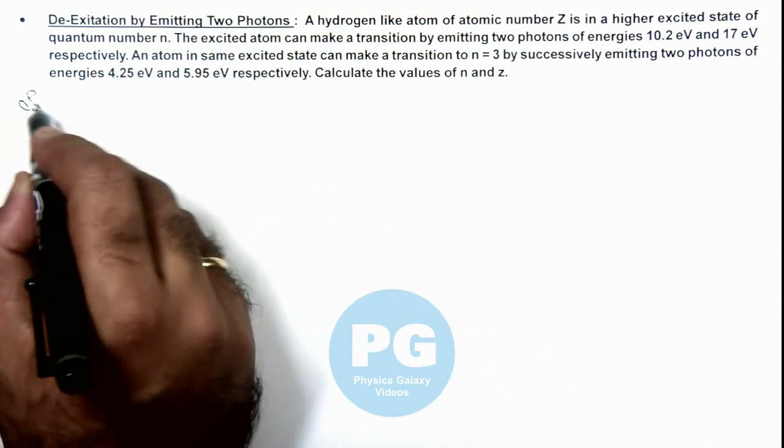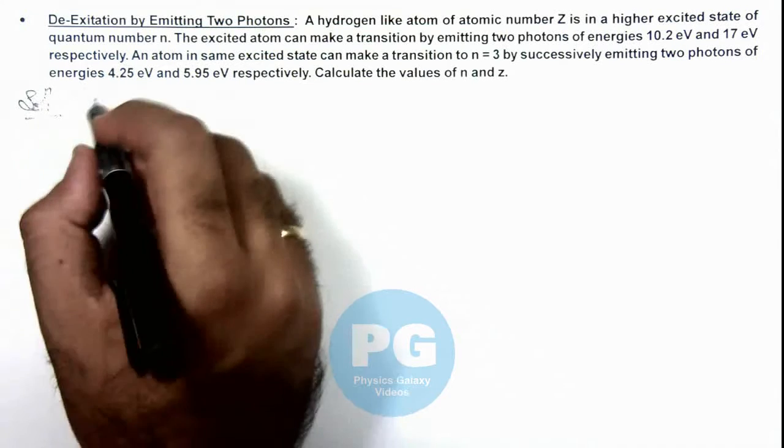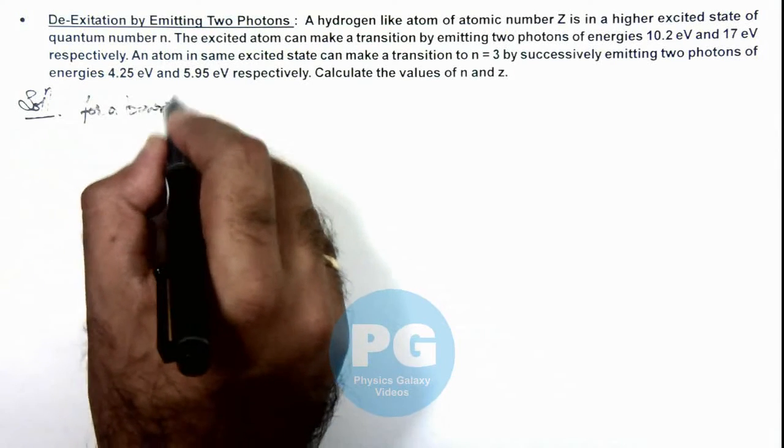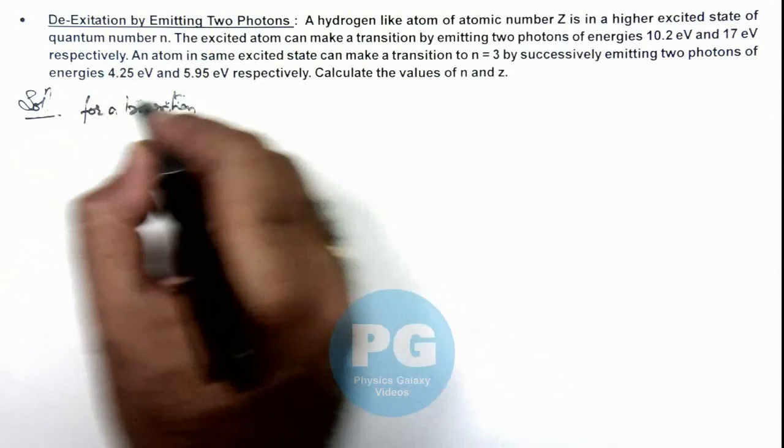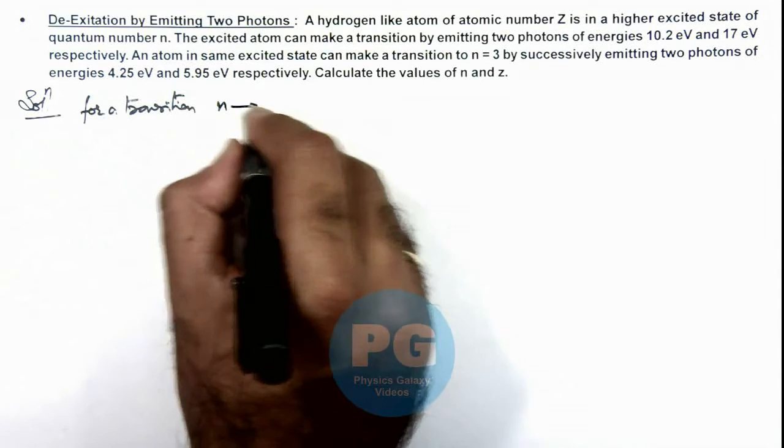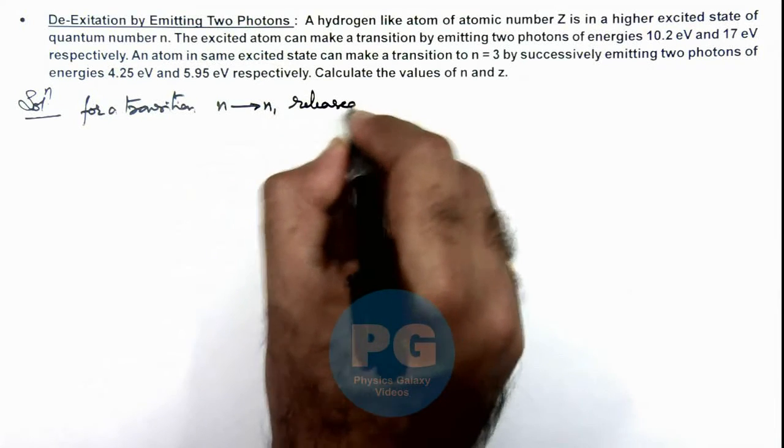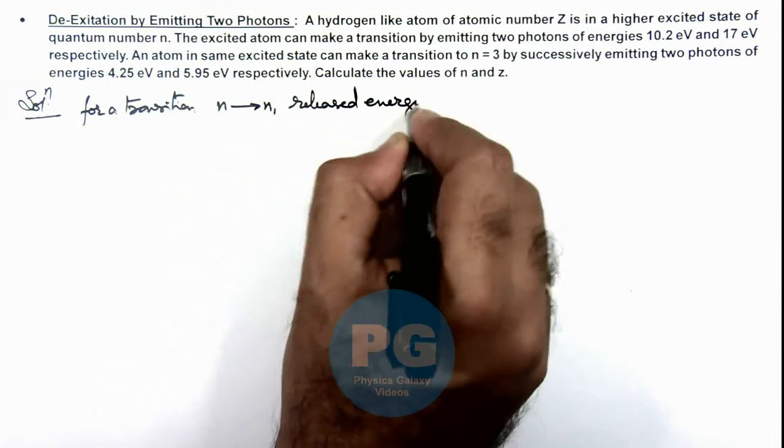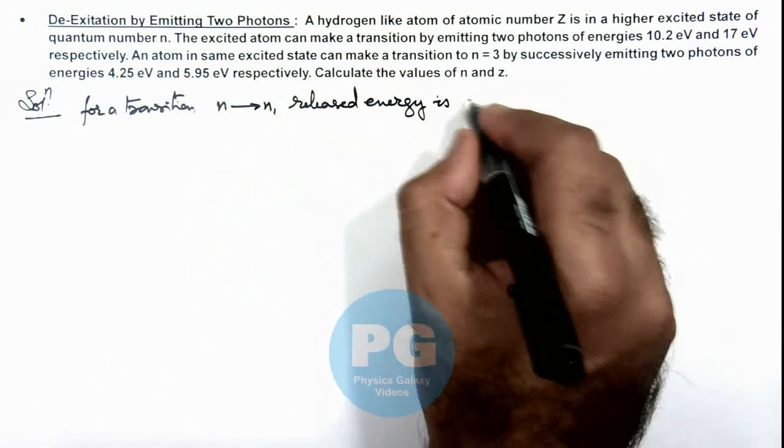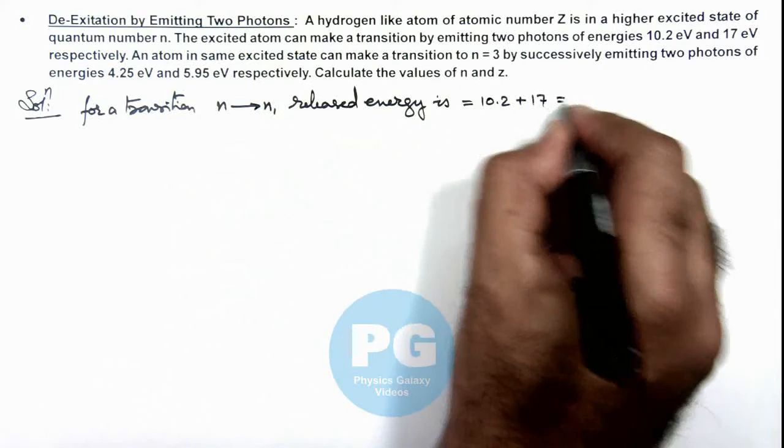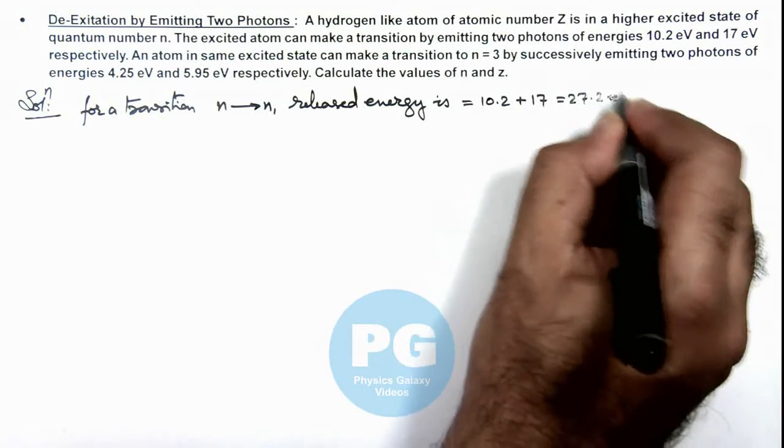So here in solution we can say for a transition n to n1, released energy is this is 10.2 plus 17 which is 27.2 electron volt.